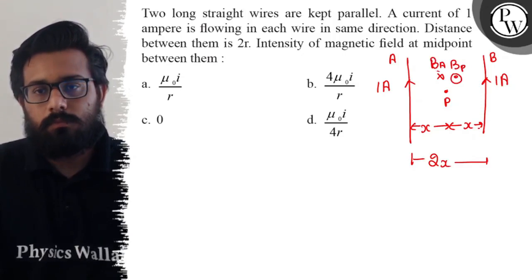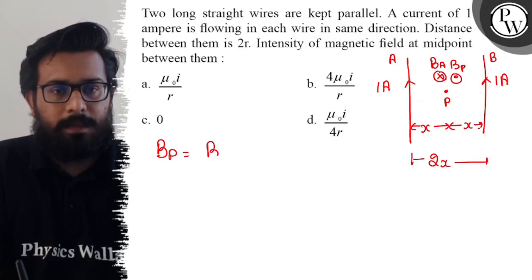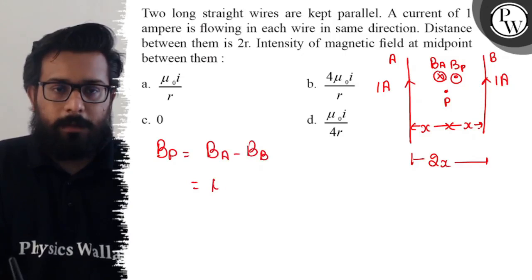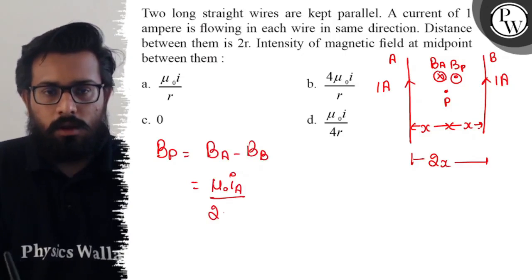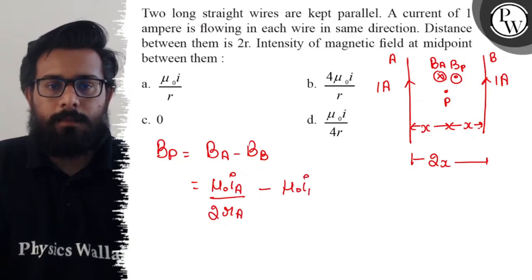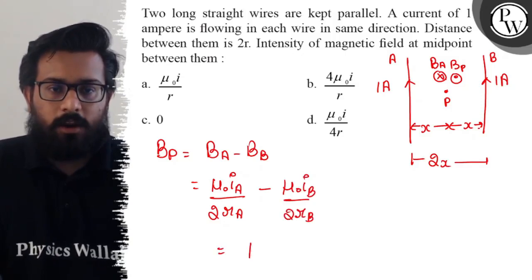So the net magnetic induction at point P comes out to be B_A minus B_B. This comes out as μ₀i_A upon 2πr_A minus μ₀i_B upon 2πr_B. Taking out μ₀...